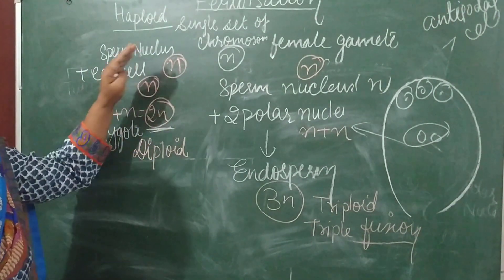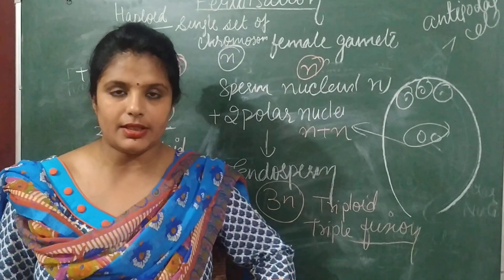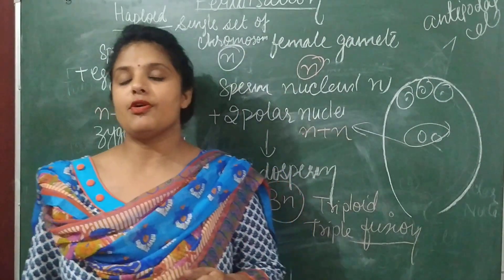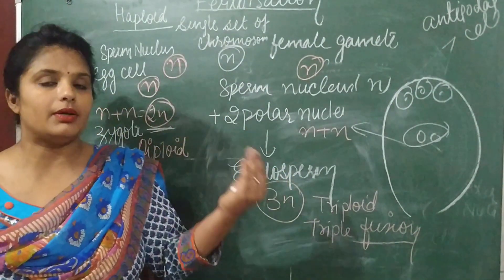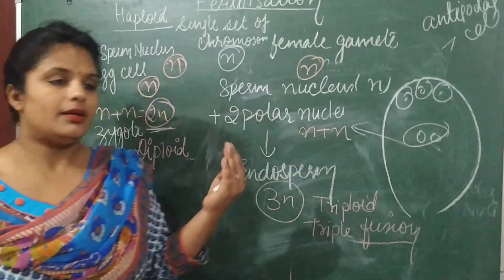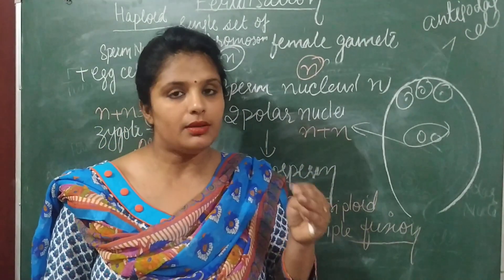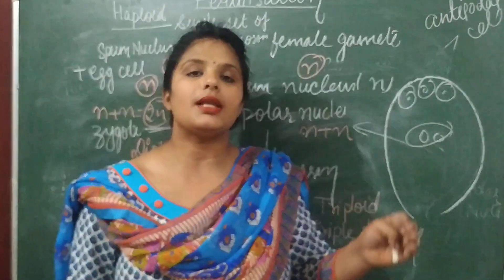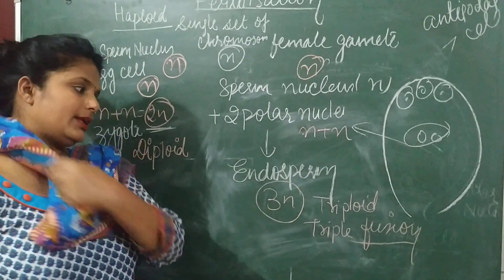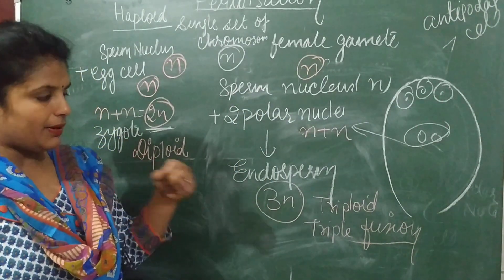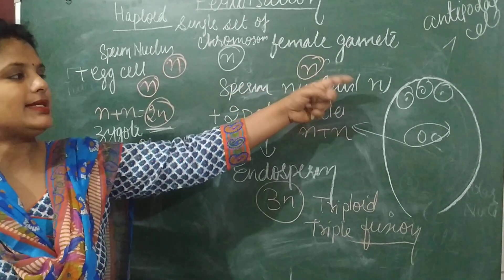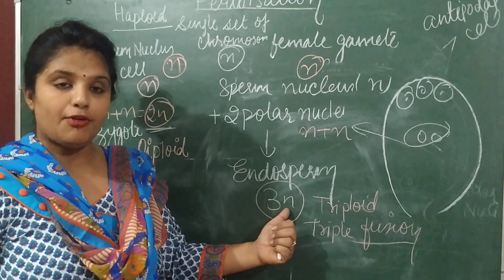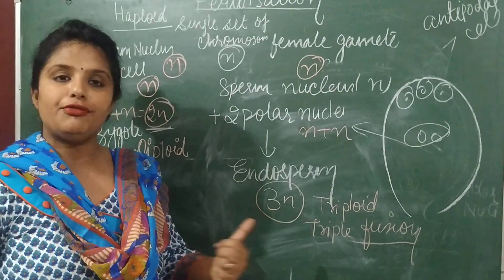To summarize: fertilization is the fusion of male and female gametes to form a zygote. Double fertilization takes place in two ways — one sperm cell combines with the egg cell, and another sperm cell combines with the two polar nuclei. The second fusion is called triple fusion because the sperm nucleus (n) combines with two polar nuclei (n + n) to form 3n chromosomes.